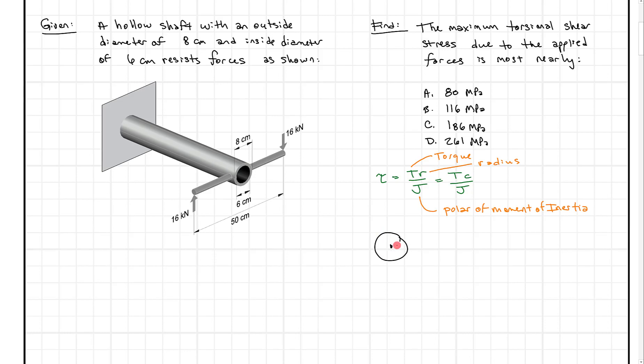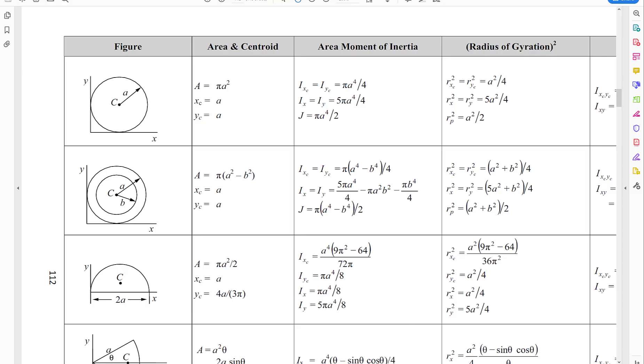So if we go back to the FE reference handbook, let's pull that up one more time. What we find in the reference handbook, you have to scroll up quite a bit. It's in other textbooks as well. You can go and look up these formulas in most structures or statics types of textbooks. But what we find here is J is going to equal pi times A to the 4 minus B to the 4 over 2. And what's A and what's B? Well, A is the outside radius and B is the inside radius.